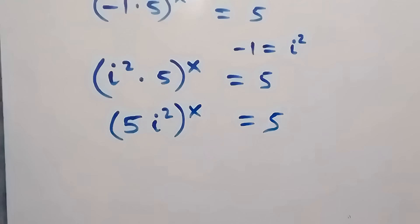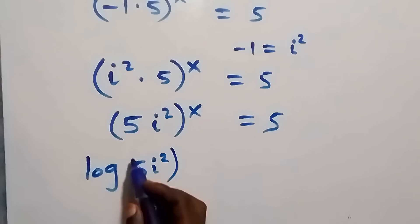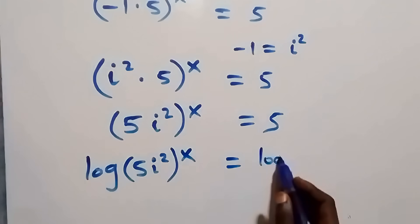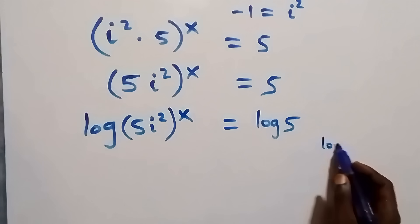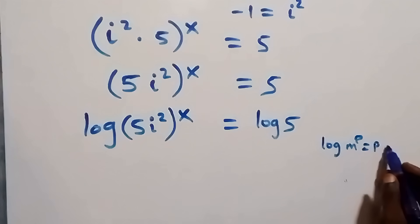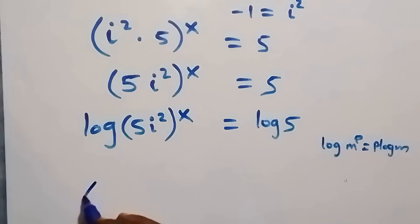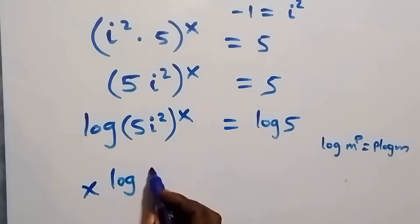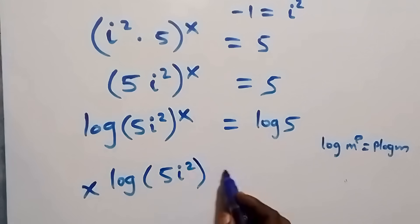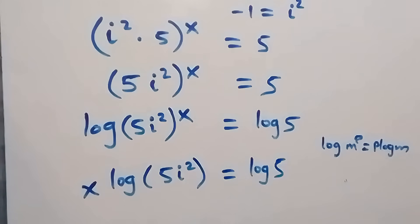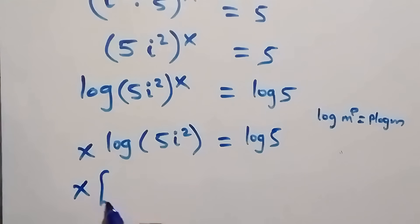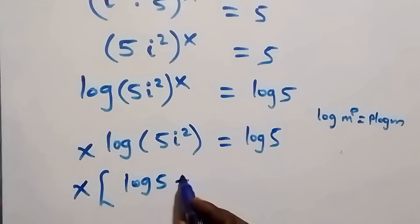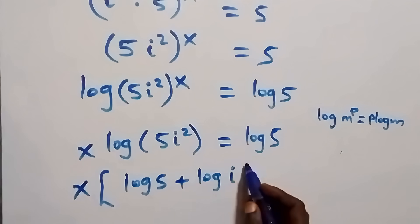We now introduce log on both sides: log of (5i²) raised to power x equals log five. Applying the power law of logarithm — log m raised to power p equals p log m — the power is x, so we have x times log(5i²). Since five is multiplying i², applying the product law of logarithm, we separate: x times (log five plus log i²) equals log five.